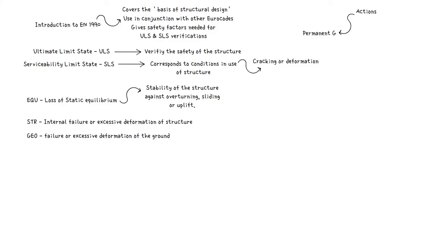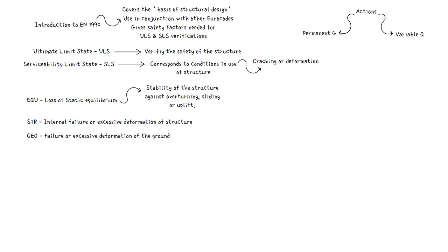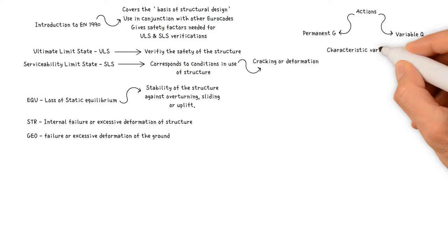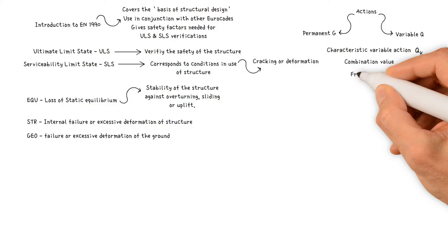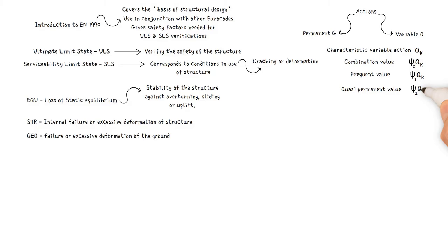Actions may be permanent, for example self-weight of structure, fittings and fixed equipment, or variable, for example weight of occupants, wind and snow loads. A variable action can be leading or non-leading. A variable action has four representative values to be used for appropriate design situations for the ultimate or serviceability limit state verifications. These are: the characteristic variable action represented by Qk, the combination value by ψ₀·Qk, the frequent value by ψ₁·Qk, and the quasi-permanent value by ψ₂·Qk.